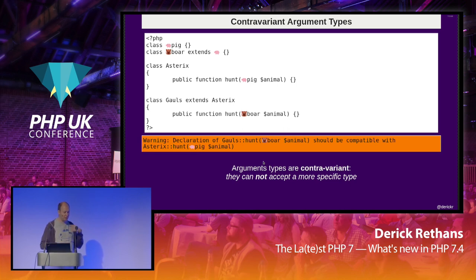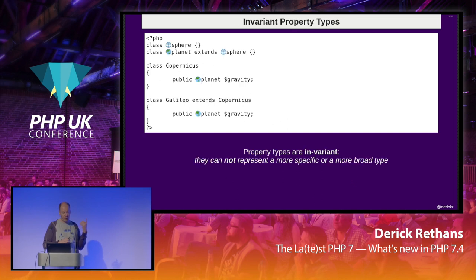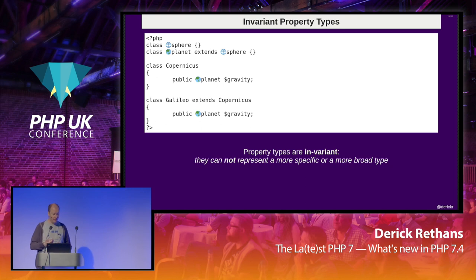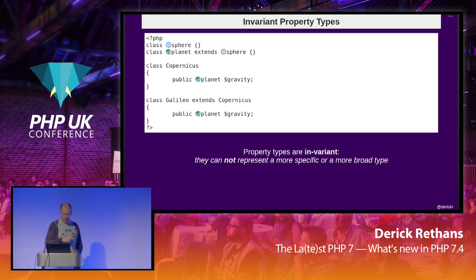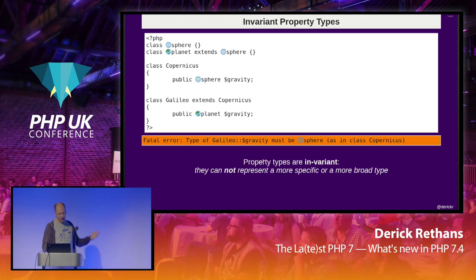Method arguments can accept a wider or broader type range, or the same. You can't narrow them the other way because in a context where you'd normally use Asterix as a class, you wouldn't be able to use it if it only handles a narrower type. The basic question is: can I use the overloaded class and method in the same context as the original? Property types can only have the same type — they are invariant — because properties are both written to and read from. If you get this wrong you get an error message.